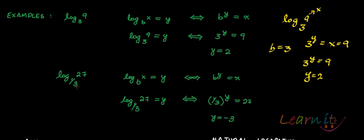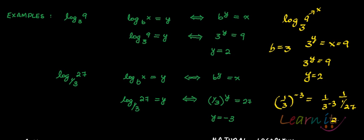Next example: log of 27 to the base 1/3. Using the equivalence log of x to the base b equals y, which means b to the power y equals x, here b is 1/3 and x is 27. So (1/3) to the power y should equal 27. The value y equals minus 3 works, because (1/3) to the power minus 3 is 1 upon (1/27), which equals 27. So the value of log of 27 to the base 1/3 is minus 3.